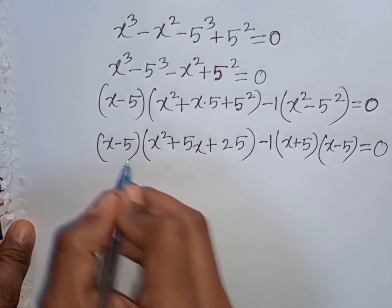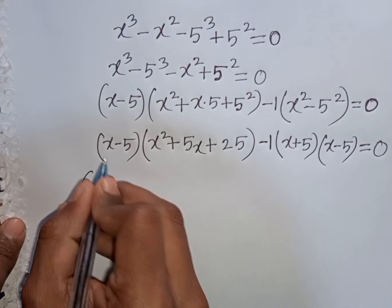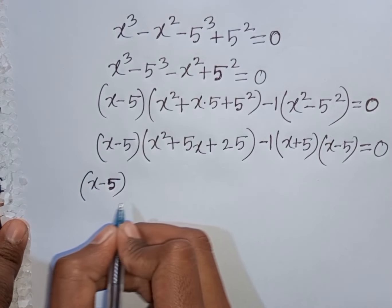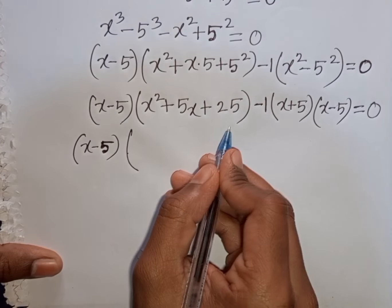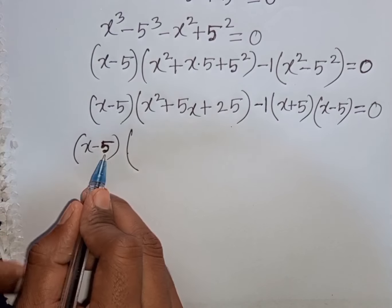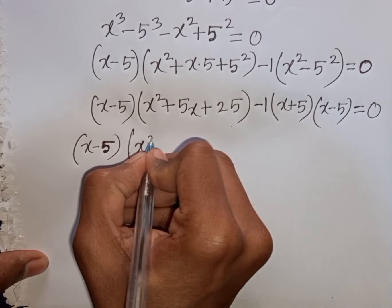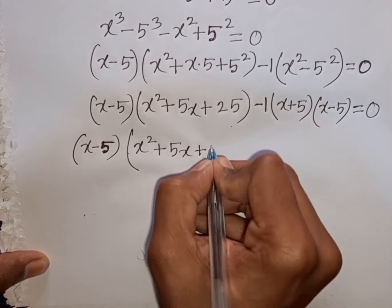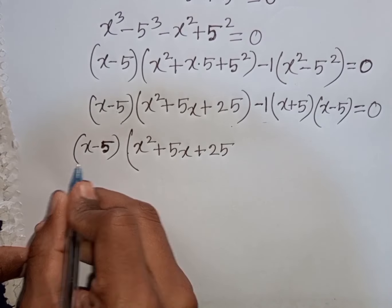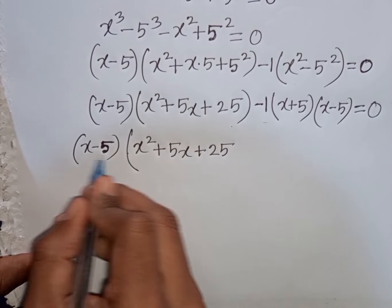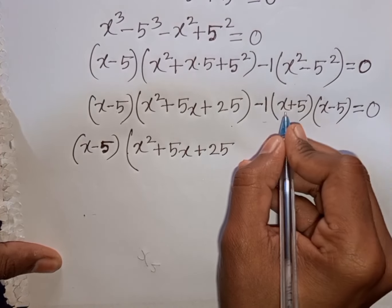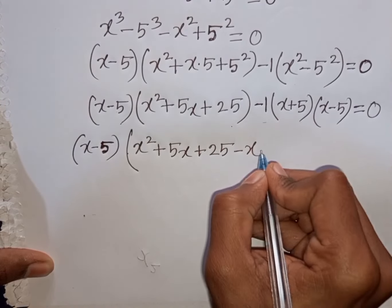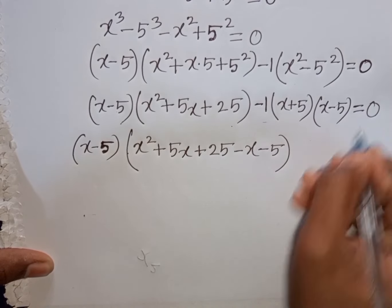Now we see (x - 5) is common in both terms. So take out common factor (x - 5). That means (x - 5) cancels, leaving x² + 5x + 25. And the other (x - 5) cancels, leaving minus 1 times (x + 5), which gives minus x minus 5. Then equals 0.